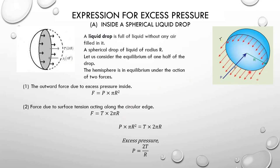At equilibrium, the two forces are balanced. So P × πR² = T × 2πR. Simplifying, we get the excess pressure P = 2T/R for a liquid drop.